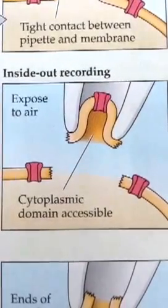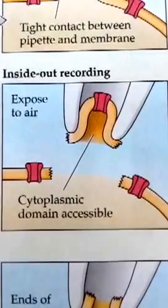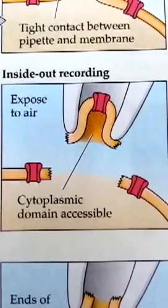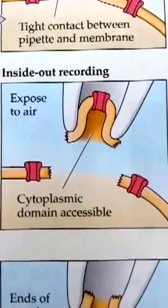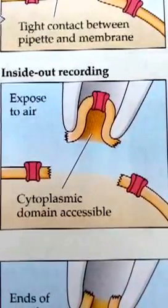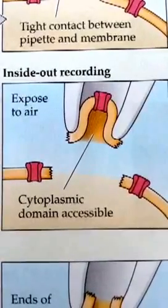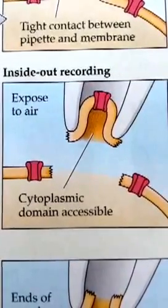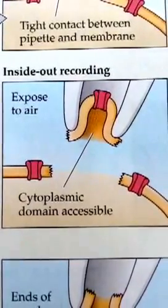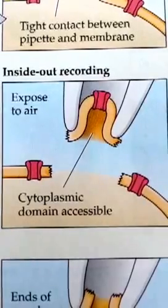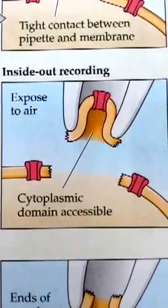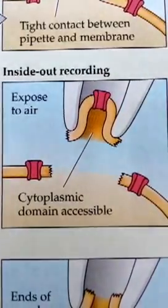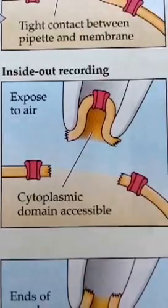To perform an inside-out recording, you're going to want to make a tight seal between the membrane and glass pipette. Then, you're going to withdraw the micropipette quickly from the cell. This leaves a patch of membrane attached to the micropipette and exposes the intracellular surface of the membrane to the external media. This configuration makes it possible to study influence of intracellular molecules on ion channel function.